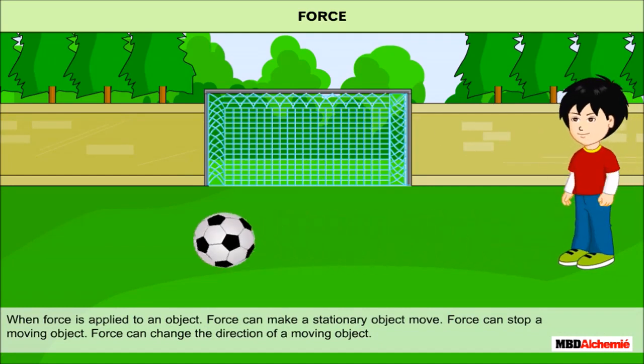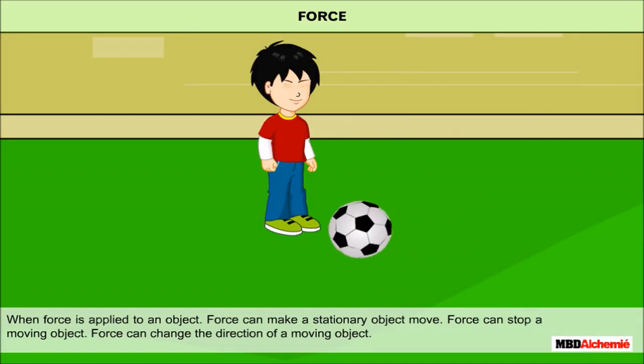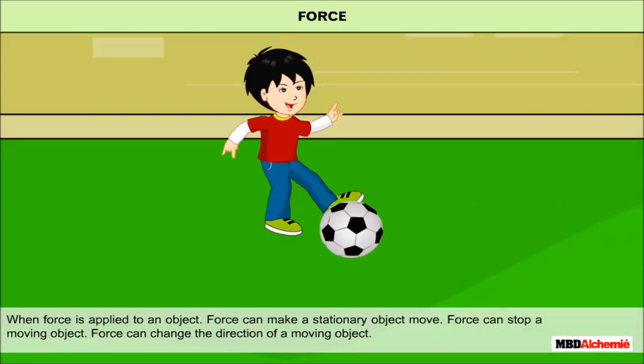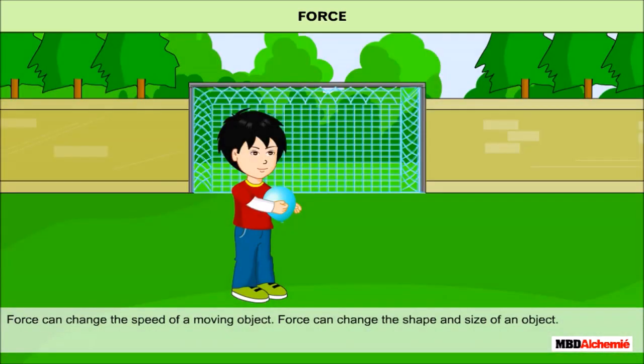When force is applied to an object, force can make a stationary object move. Force can stop a moving object. Force can change the direction of a moving object. Force can change the speed of a moving object. Force can change the shape and size of an object.